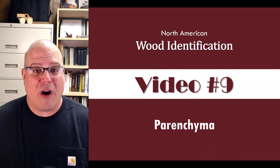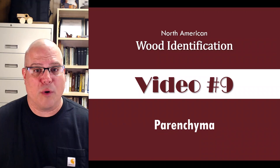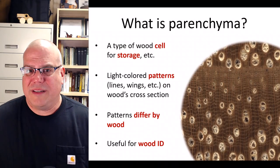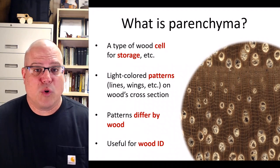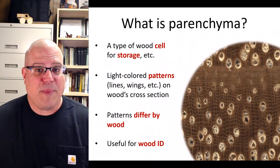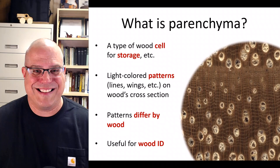In this video, we'll return to our Wood Anatomy Toolbox and give you an introduction to parenchyma and the kinds of patterns it forms in North American hardwoods. Parenchyma is a type of wood cell used by the tree for storage and other functions. Parenchyma cells form light-colored patterns such as lines, wings, and rings on the wood's cross-section.